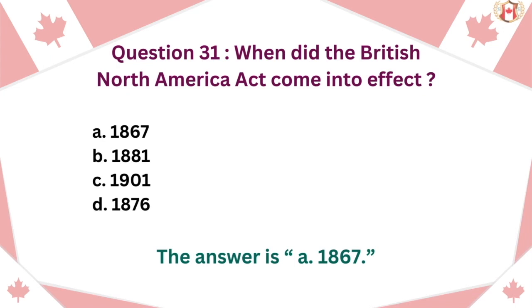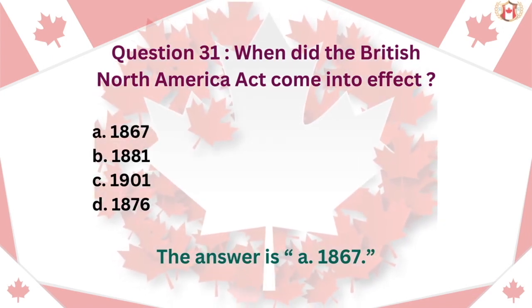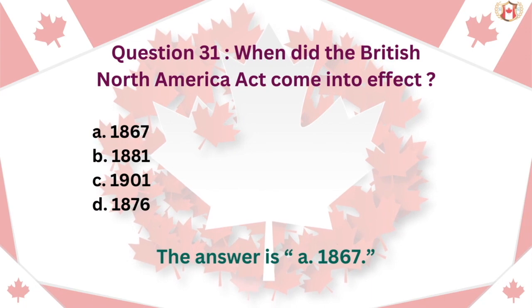Question 31: When did the British North America Act come into effect? A. 1867, B. 1881, C. 1901, D. 1876. The answer is A. 1867.